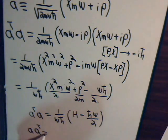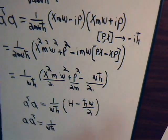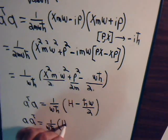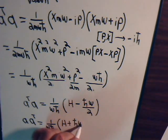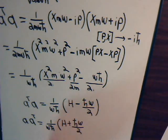So, this is equal to 1 over omega h bar, times the Hamiltonian plus h omega over 2.